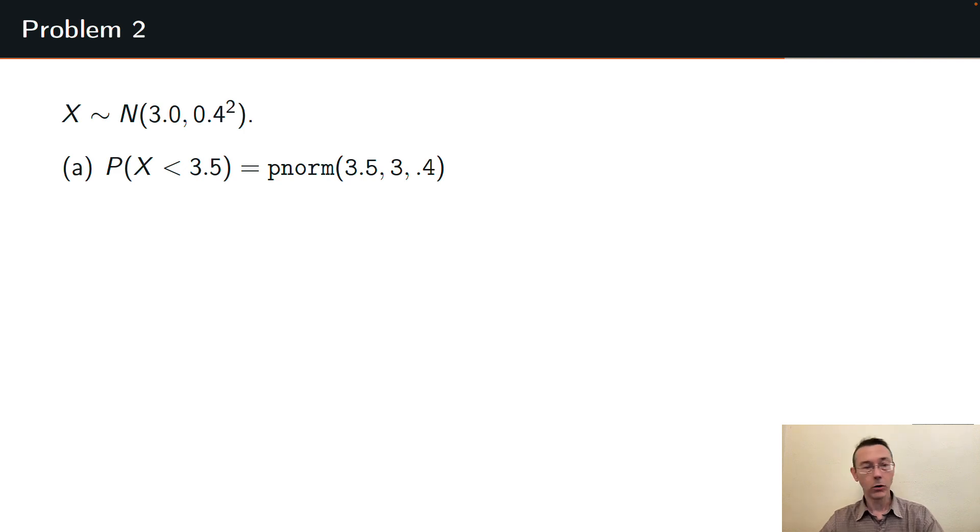Notice that pnorm, this is an R command by the way, wants a standard deviation not a variance. And so this is a place where my notation that I wrote here, N of 3.0, 0.4 squared, is convenient.